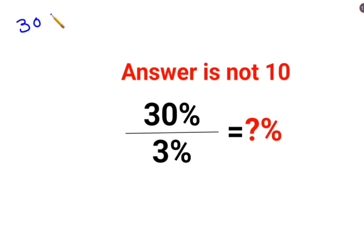See, 30%. Whenever they have given you a percent, you can convert it into a fraction or a number by dividing it by 100. So we have 30 upon 100 divided by 3 upon 100. Now whenever there is a division involving fractions, we follow a specific rule.